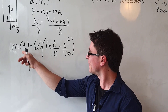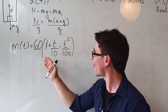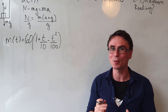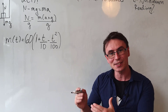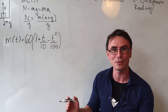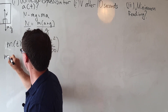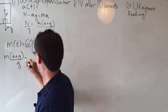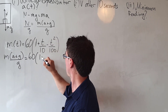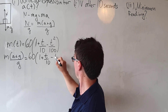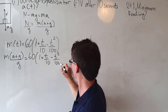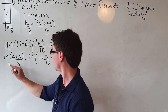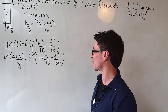Just before we do that, notice something incredibly important: the mass at t equals zero is 60. This means the mass of the person must equal 60 kilograms at time t equals zero, when the lift is not moving. Setting those two expressions equal, we get m(a + g)/g equals 60(1 + t/10 − t²/100). Since the mass equals 60, we can directly cancel those two factors.